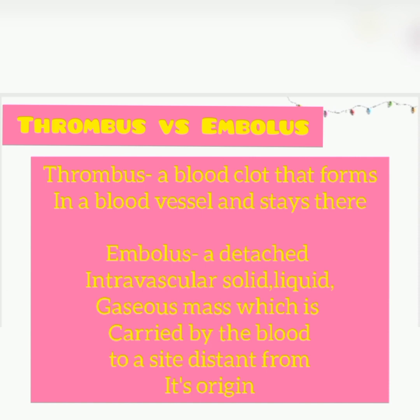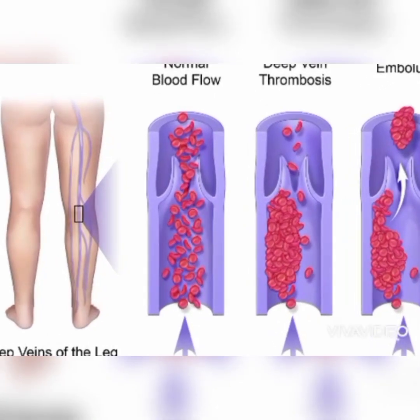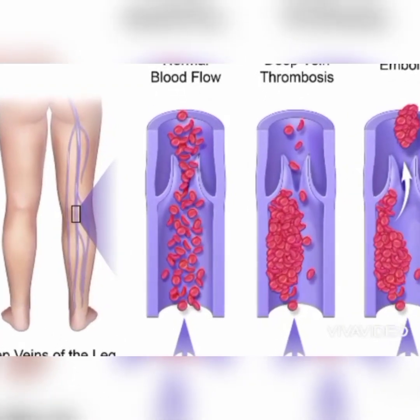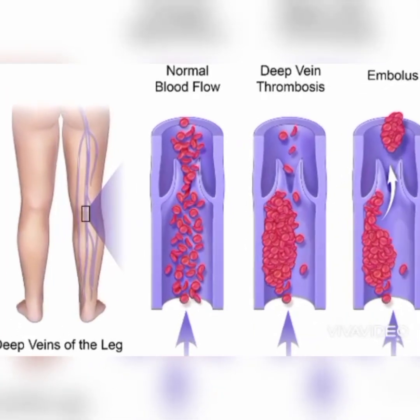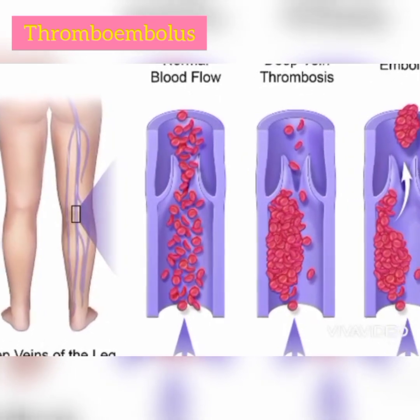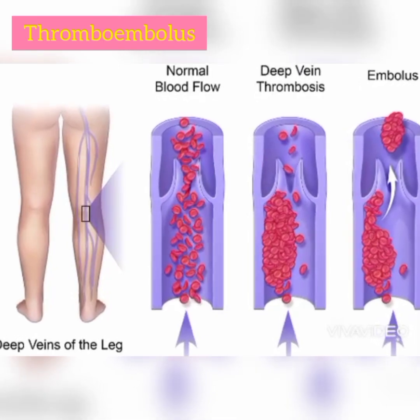An embolus can be anything, as long as it has traveled from its original site to the site it's currently in. It can be fat, amniotic fluid, air bubbles, or a blood clot. So when a piece of blood clot breaks off from the original site of clotting, enters the circulation, and then lodges into a different part of the vasculature elsewhere in the body, it's called a thromboembolus.